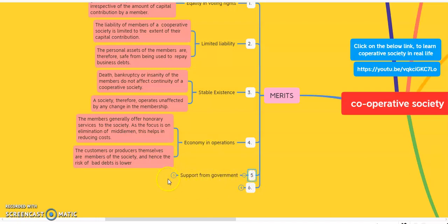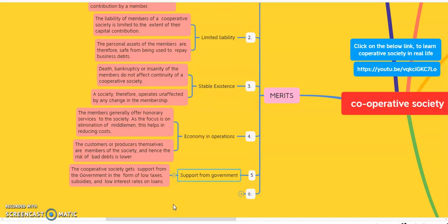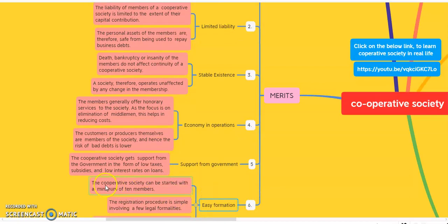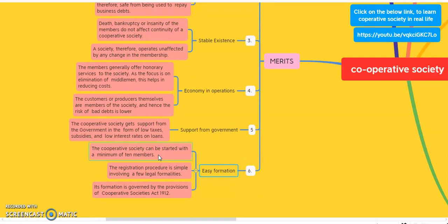The next merit is support from the government. Cooperative societies always get some financial support from the government in the form of low taxes, subsidies, and low interest rate loans. Another merit is easy formation — a cooperative society can be started with a minimum of 10 adult members. The registration process is very simple and requires very few legal formalities. Its formation is governed by the provisions of the Cooperative Societies Act, 1912.